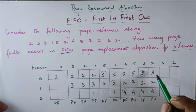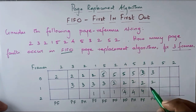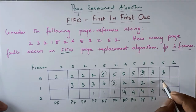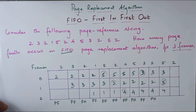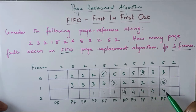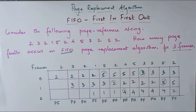5 — replace 2. So 3, 4. Page 2 — page fault. So 2, 5, 3.